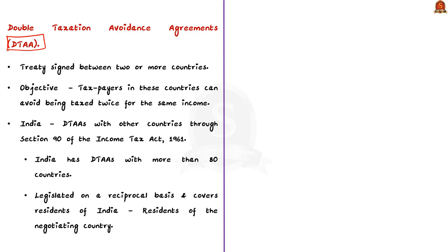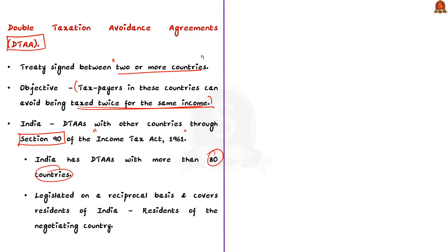DTAA is a treaty signed between two or more countries. The key objective of DTAA is that the taxpayers in these countries can avoid being taxed twice for the same income generated by them. It is applicable in cases where a taxpayer residing in one country A earns income from another country B. India establishes DTAA with other countries through Section 90 of the IT Act 1961. Presently, India has DTAA with more than 80 countries. It is legislated on a reciprocal basis and covers residents of India as well as residents of the negotiating country.